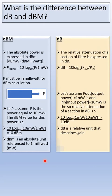dB is the relative attenuation of a section of fiber expressed in dB. dB = 10 log₁₀(P_out/P_in). Let's assume P_out = 1 milliwatt and P_in = 10 milliwatts.